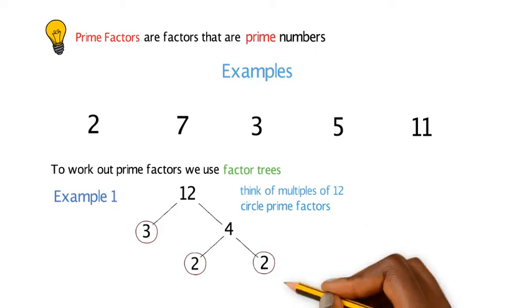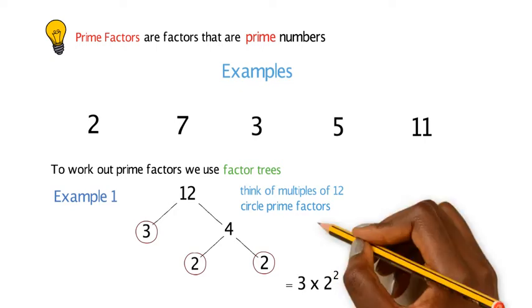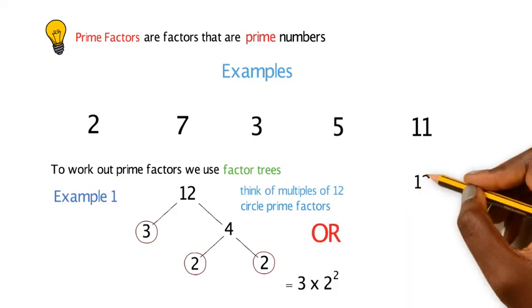The way that you would write your answer would be 3 times 2 squared. You're squaring the 2 because there's 2 lots that you found. There's other ways that you can do it.